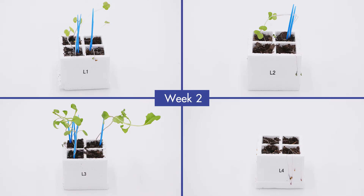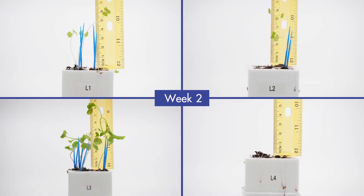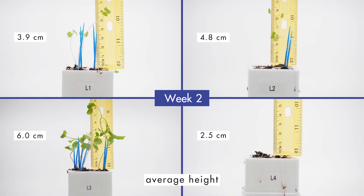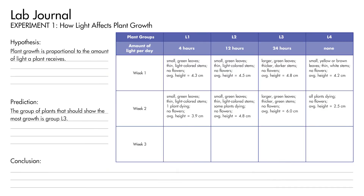Observe the four groups of plants at the end of week two. Record your observations in your journal, and compare the average height of the plants in each group. Notice the differences between week one and week two. Some of the plants in groups L1, L2, and L4 appear to be dying, but the plants in group L3 are taller and healthier.